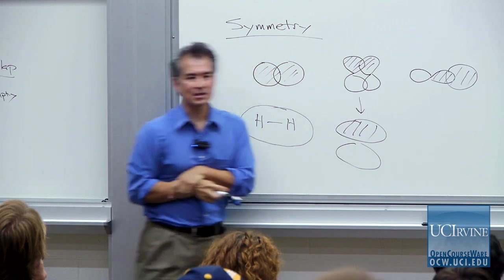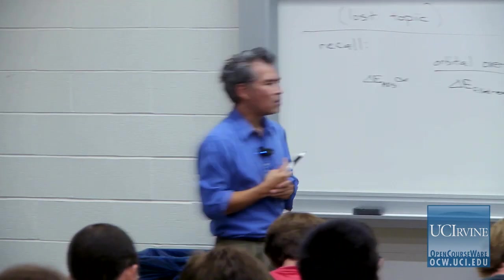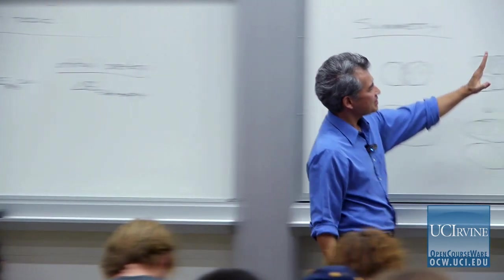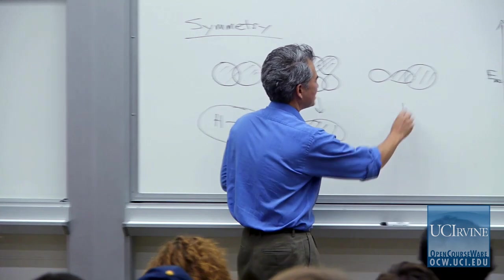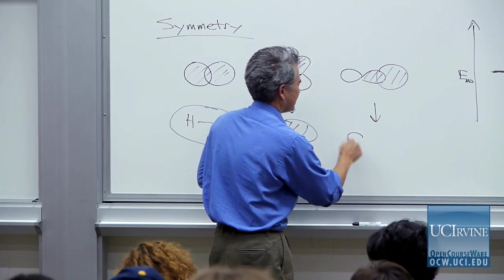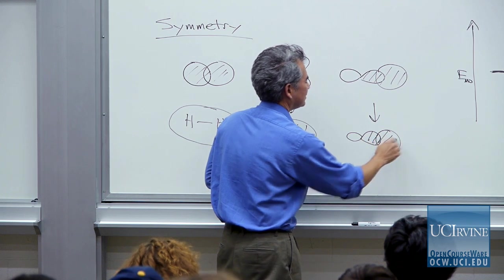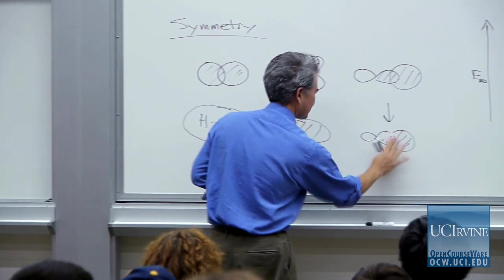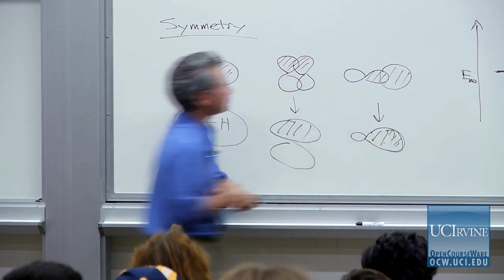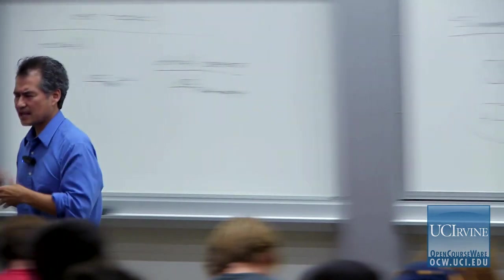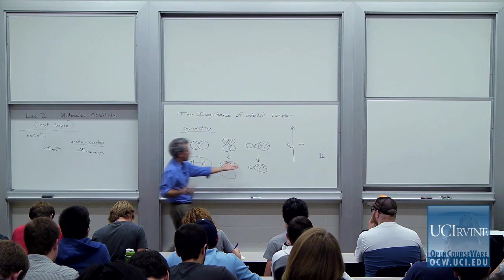I can even imagine the interaction of a p orbital with an s orbital, as long as I tilt it so that everything ends up with some sort of positive, constructive interference in terms of wave functions. Those are examples of forming bonds. In this case I would end up with some sort of a sigma bond again.